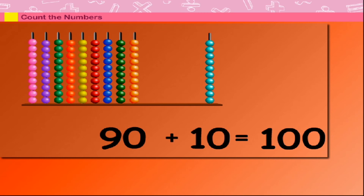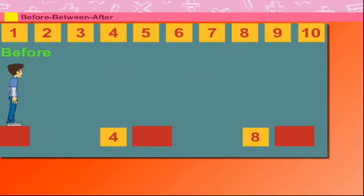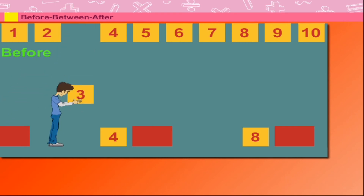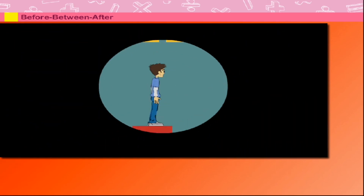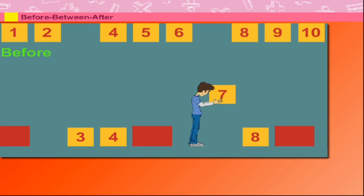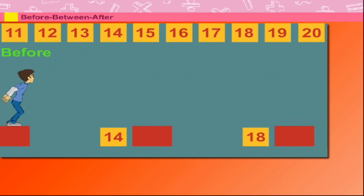90 plus 10 is equal to 100. Before. Between. After. Here is Sammy pulling out numbers from the top. What comes before 4? Sammy pulls down 3. What comes before 8? Sammy jumps and pulls down 7. What comes before 14?